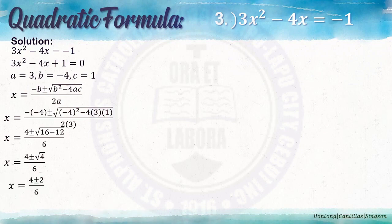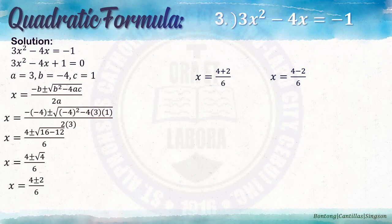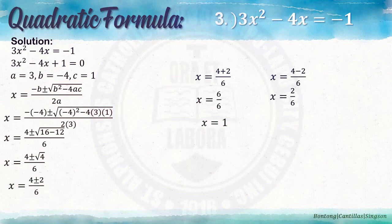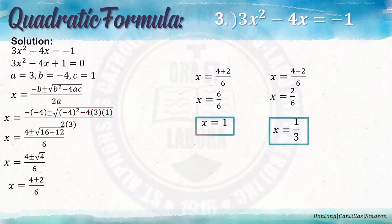Continuing: x equals 4 plus or minus 2 over 6. So x equals 4 plus 2 over 6, and x equals 4 minus 2 over 6. 4 plus 2 over 6 is 6 over 6, which equals 1. 4 minus 2 is 2, and 2 over 6 is one-third. Make sure to simplify your answer. So the values of x are 1 and one-third.